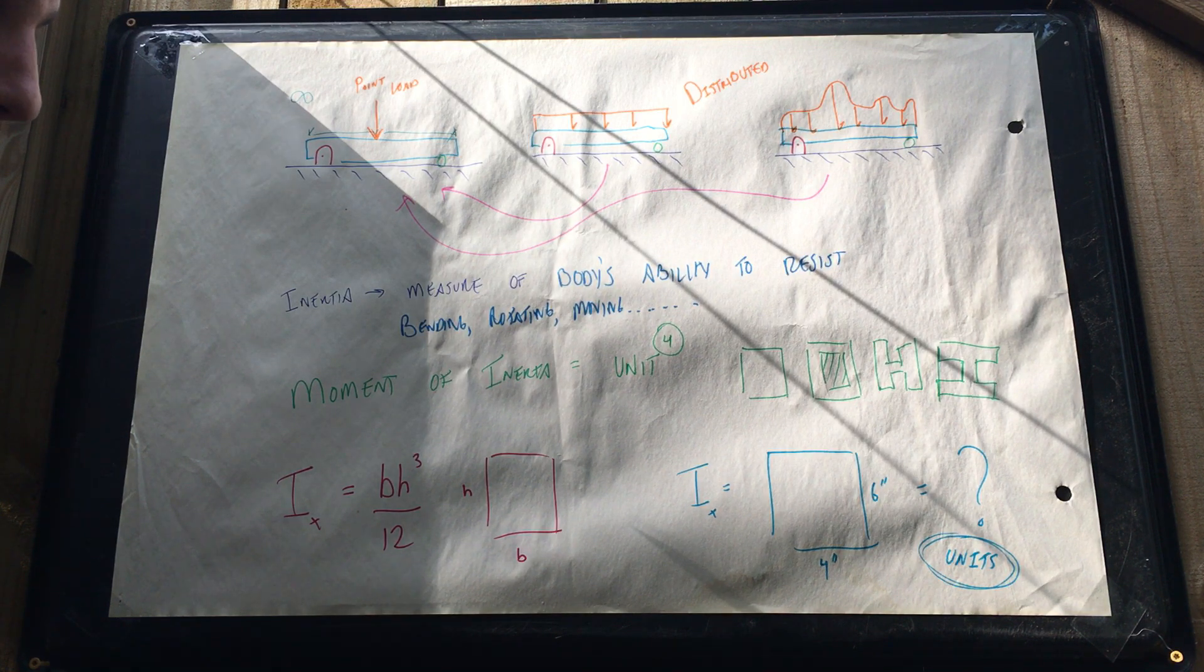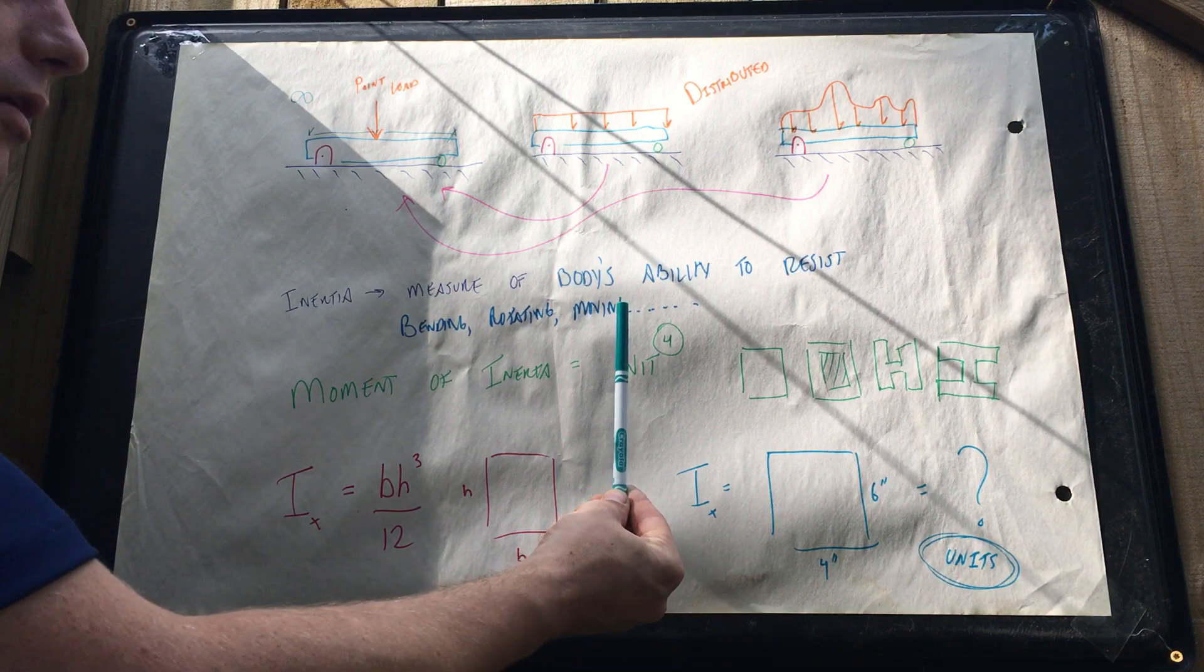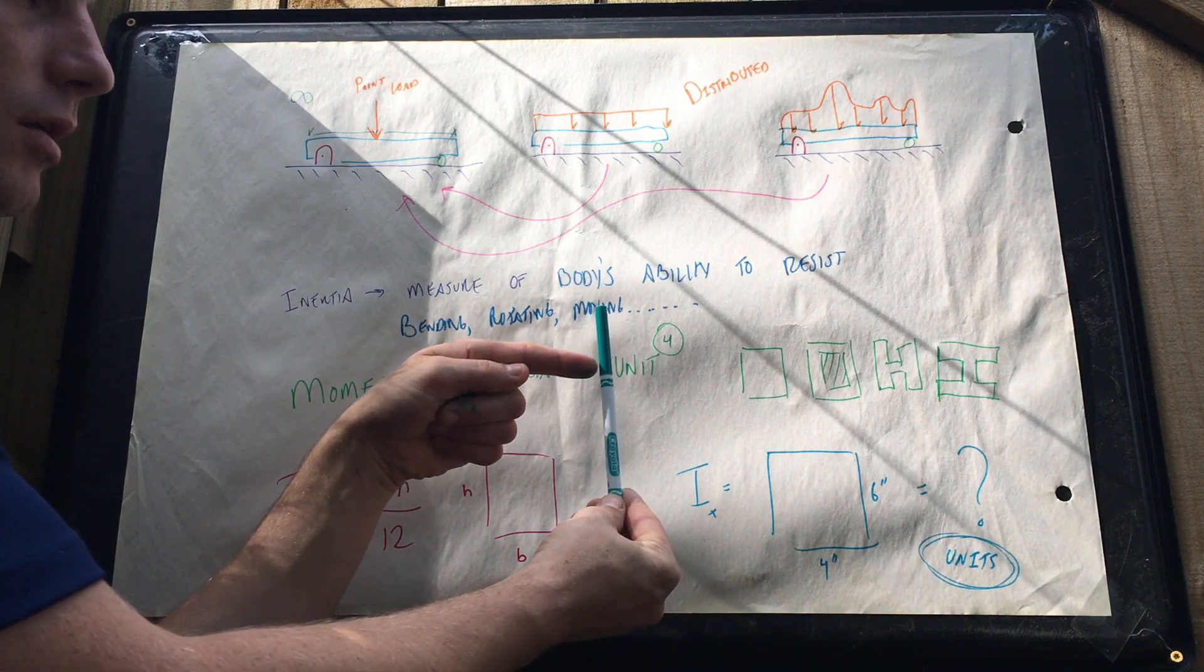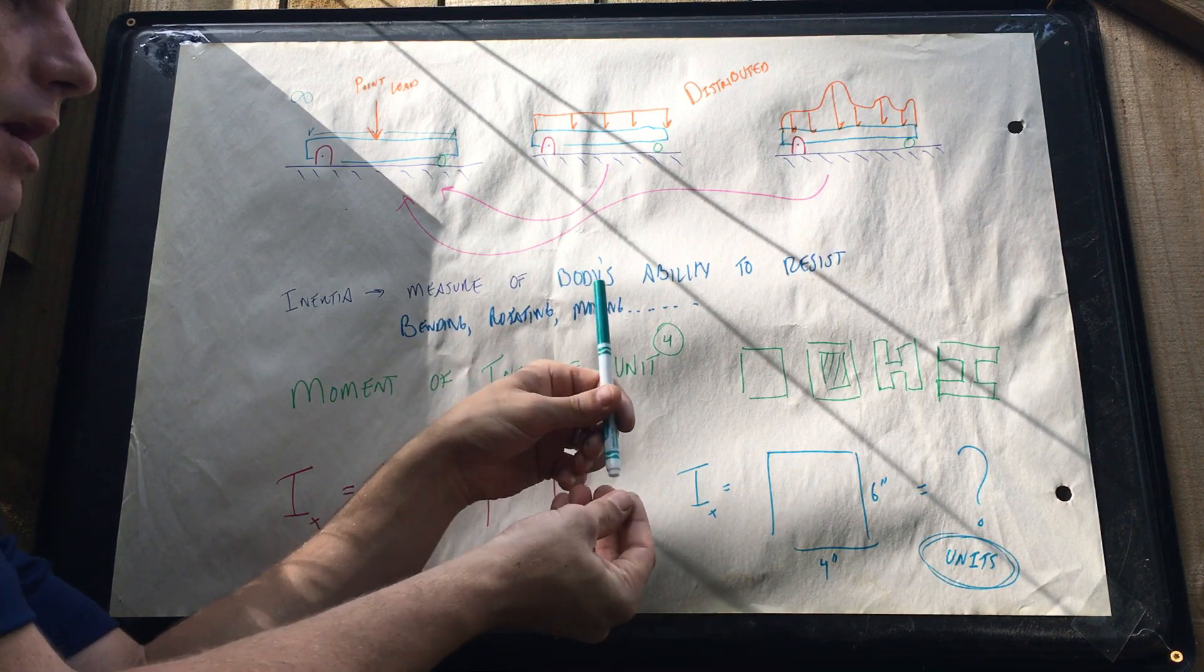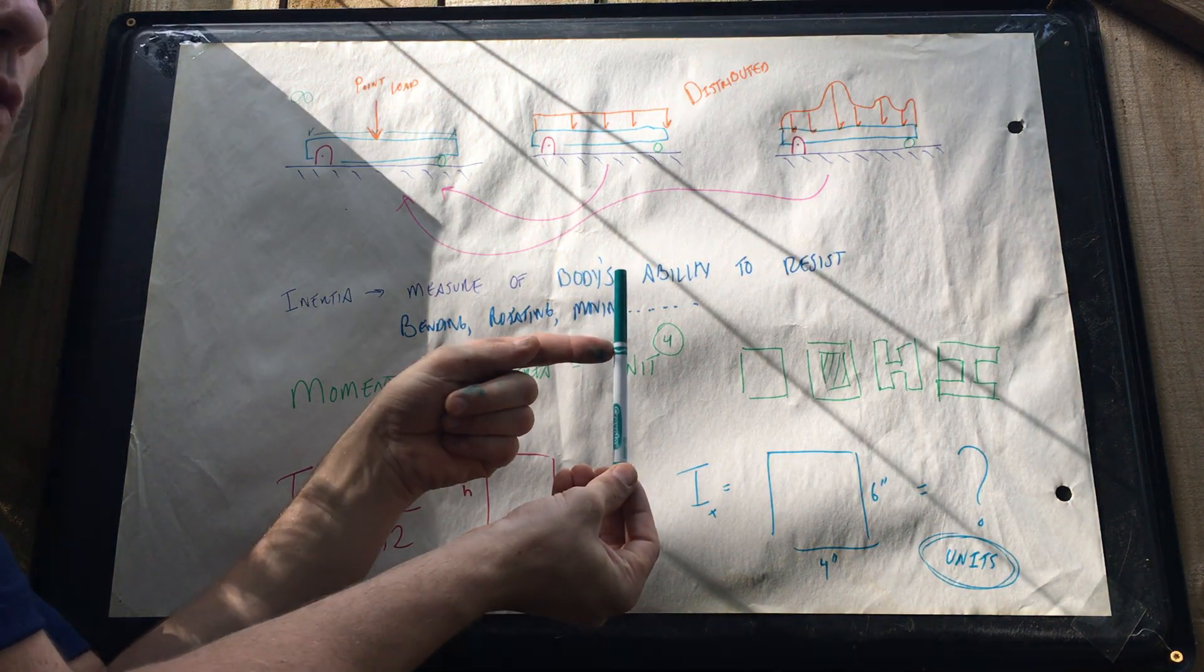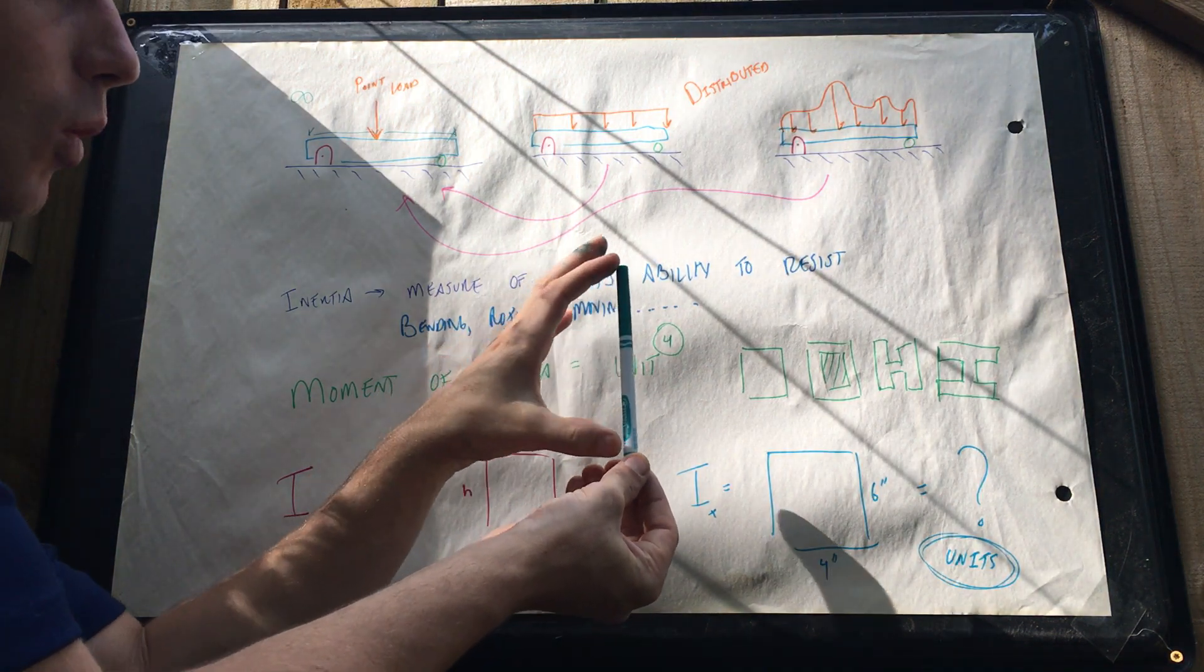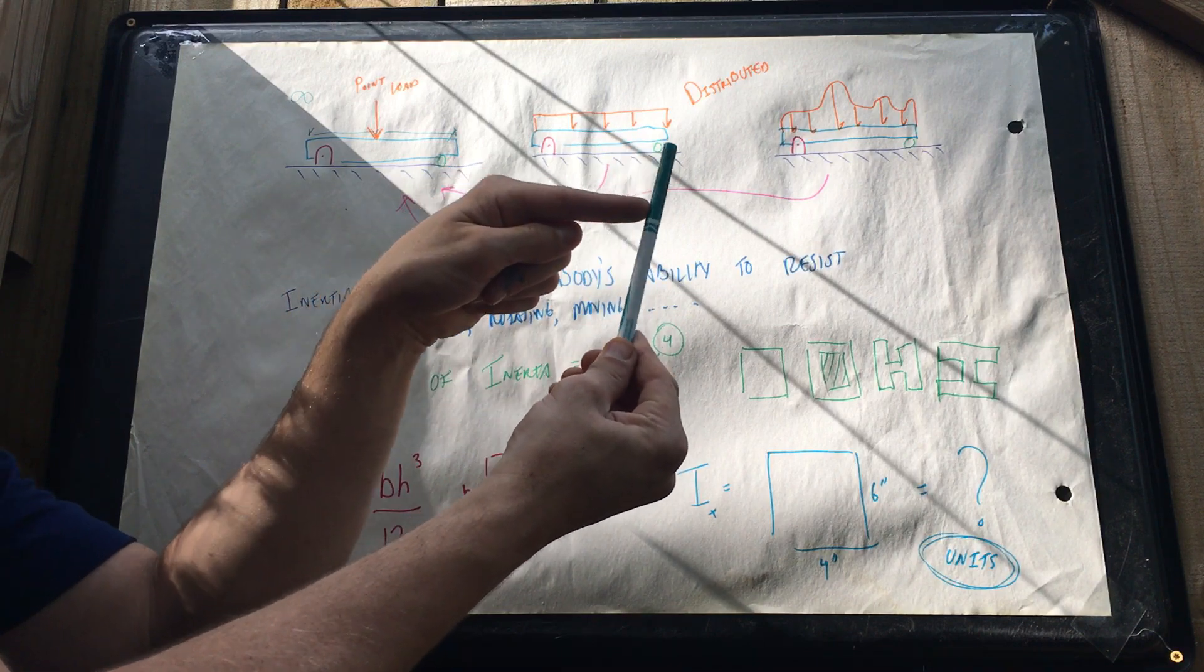So what that means is, let's just say for an example, we'll take the little pen here. If I apply a force here, if I was able to balance this right here, it's gonna fall over. However, there is a small amount of force I can push into it where it won't fall over.